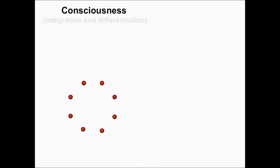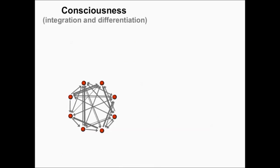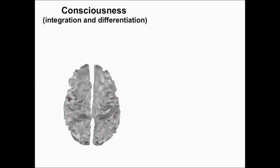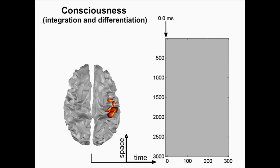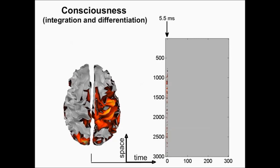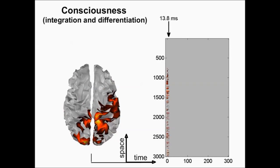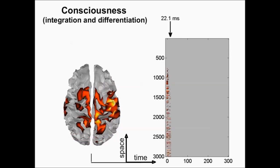According to the integrated information theory of Giulio Tononi, consciousness is related to a system's capacity for information integration. In the case of a brain, the consciousness-supporting network should present an optimal balance between functional integration and differentiation. That is, when we stimulate a part of the brain, it reacts locally but also at distant sites, so the electrical response is widespread and differentiated according to the location in the brain, as you can see here.